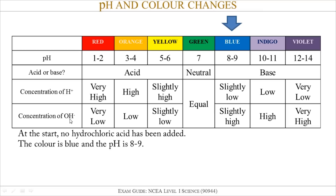Now I'm going to add something to this table: the concentration of H+ ions compared to OH- ions. Your teacher may or may not have taught you this, but in any solution you always have H+ ions and OH- ions. The only difference between an acidic and basic solution is that in an acidic solution you have more H+ ions than OH- ions, in a basic solution you have more OH- ions than H+ ions, and at neutral the concentrations of H+ and OH- ions are equal.